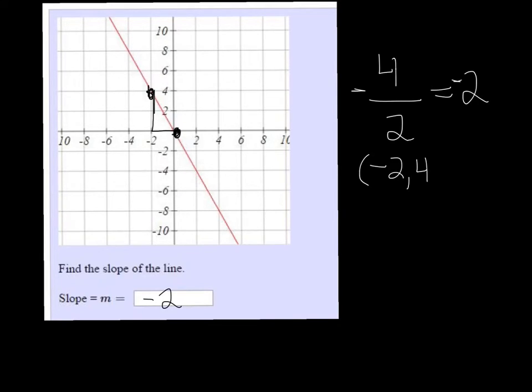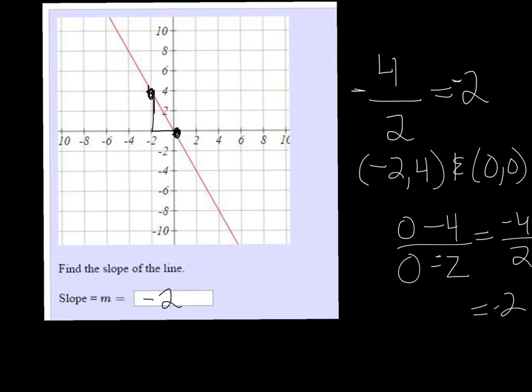So using the slope formula I get zero minus four over zero minus negative two, and that would be negative four over positive two, which is negative 2. So both ways you will get negative 2. It just depends on what way you're comfortable with.